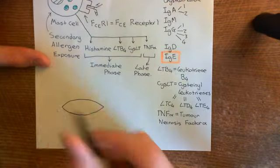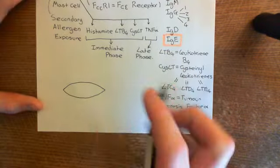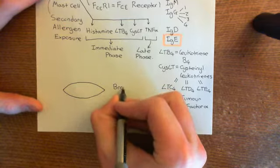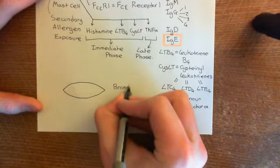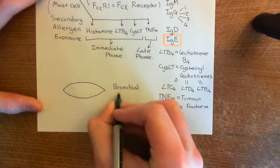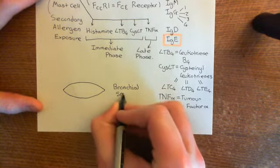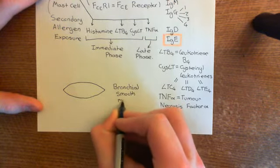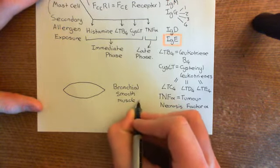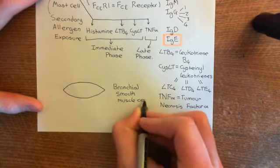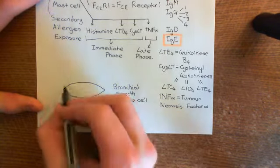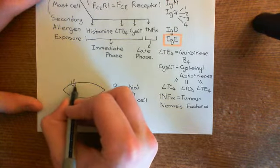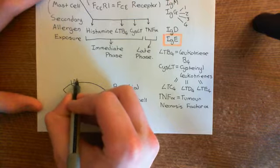Here is a bronchial smooth muscle cell in the smooth muscle cell layer. Histamine is going to act on this bronchial smooth muscle cell and cause contraction. The cysteinyl leukotrienes are also going to act on the smooth muscle cell to cause contraction.